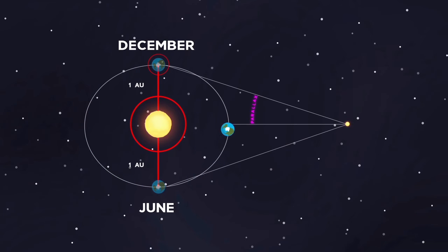Since we have the length of the baseline, 2 AU, and can measure the parallax of the star, we can calculate the distance to the star.